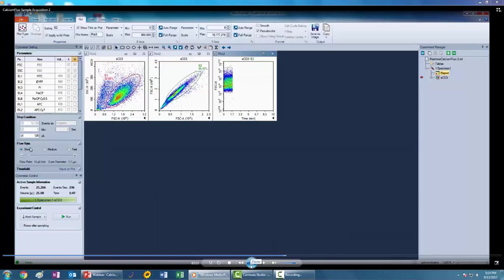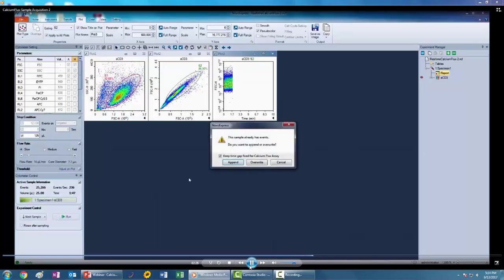Before you add the calcium flux stimulant, you're going to want to select run because there is an additional step required before actual data acquisition. You want this pop-up window to show up, and now you want to add your calcium stimulant. This ensures that the amount of time that elapses after addition of the calcium flux stimulant to the sample is as small as possible. So when appending data, make sure that this fixed time gap checkbox is selected, add the stimulant, quickly vortex the sample, and initiate acquisition of your sample.